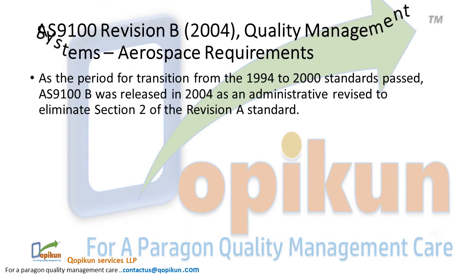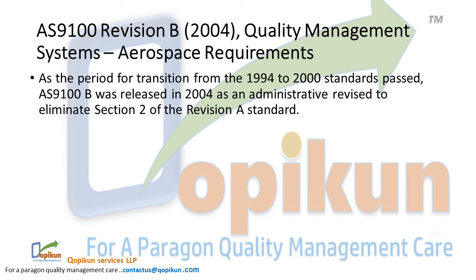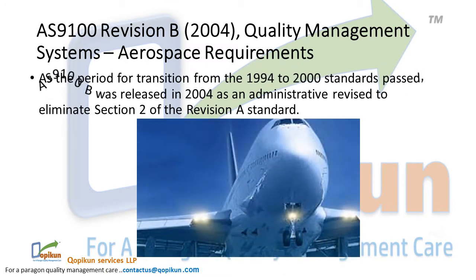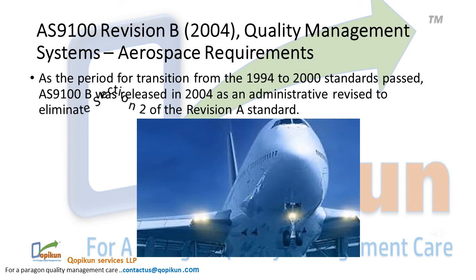AS9100 Revision B-2004: Quality Management Systems — Aerospace Requirements. As the transition period from the 1994 to 2000 standards passed, AS9100B was released in 2004 as an administrative revision to eliminate Section 2 of the Revision A standard.